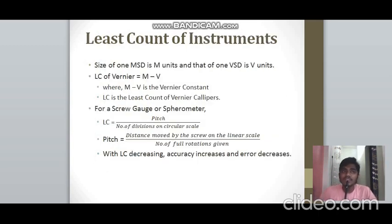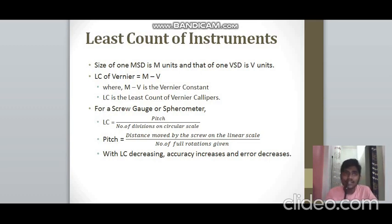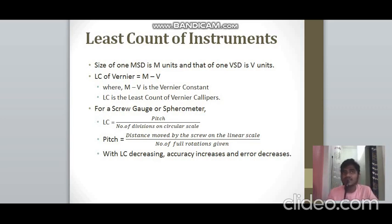The least count is the smallest value that an instrument can measure. For a Vernier caliper, LC = 1 MSD − 1 VSD (one main scale division minus one Vernier scale division), also called the Vernier constant. For a screw gauge or spherometer, LC = pitch / number of divisions on the circular scale, where pitch = distance moved on the linear scale per full rotation. As least count decreases, accuracy increases and error decreases.